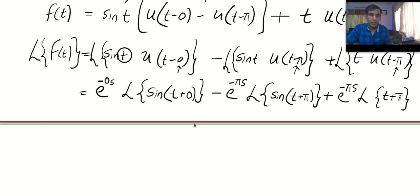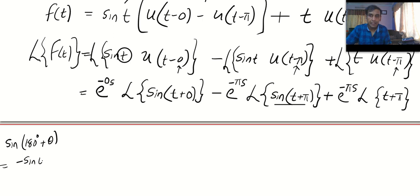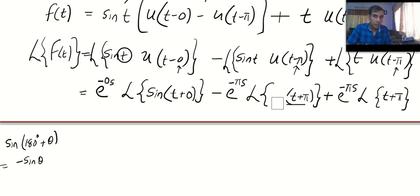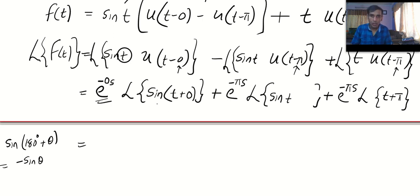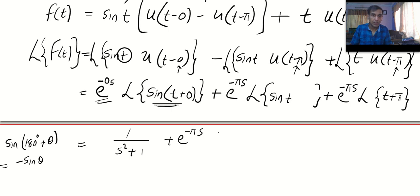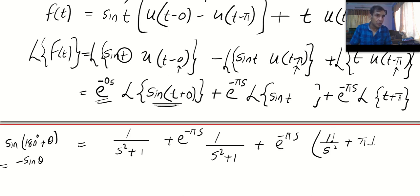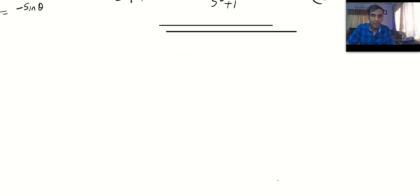We need one trigonometric identity: sin(180° + θ) = −sin(θ). So sin(t + π) = −sin(t), which means −sin(t + π) = +sin(t). Therefore e^(−0s) = 1, and Laplace of sin(t) = 1/(s² + 1). Then +e^(−πs) × 1/(s² + 1). For the last term: e^(−πs) × Laplace of (t + π) = e^(−πs) × [1/s² + π/s].